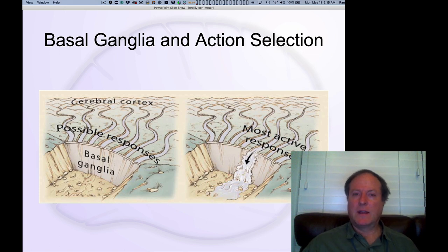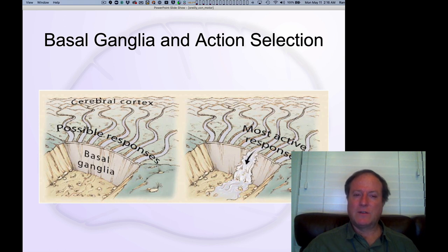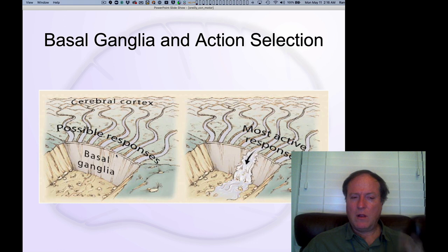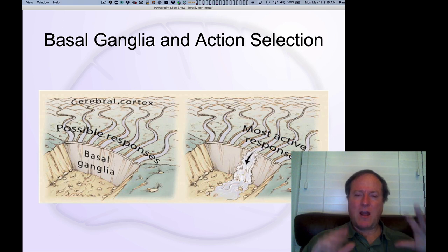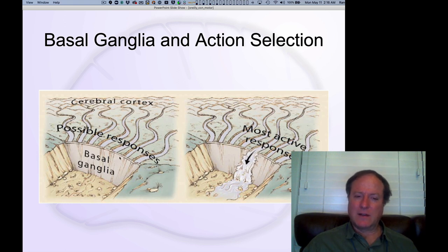Now we're going to talk about the basal ganglia and its role in action selection and cognitive action selection. This is a very nice diagram from Rich Ivory and colleagues that gives an intuitive understanding of how the basal ganglia acts as an inhibitory wall, blocking possible actions that might be taken. The cerebral cortex is coming up with a bunch of different possible actions you could perform, and the basal ganglia is asking which of these should we do — let's pick one.